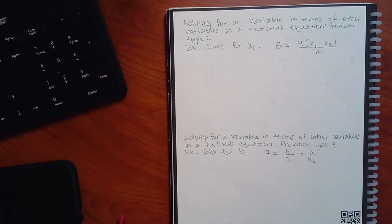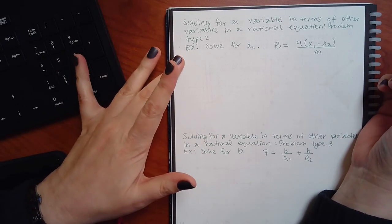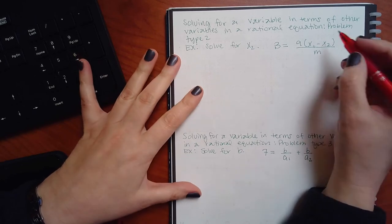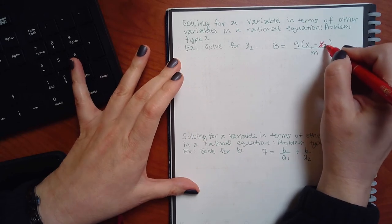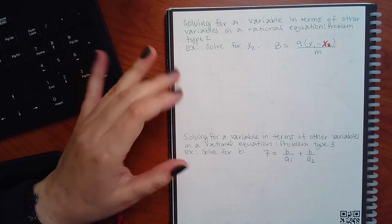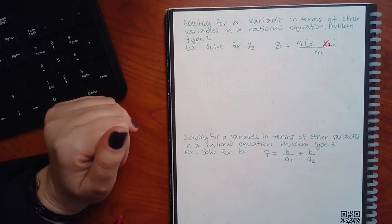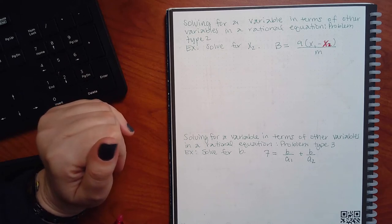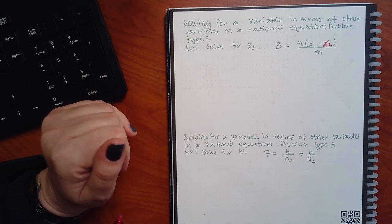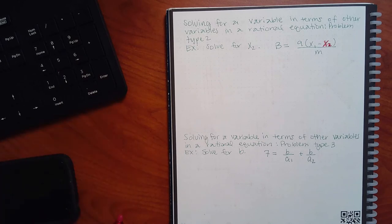Now who am I solving for in this next problem? Be careful — it's not x squared. It's x subscript 2, written x₂, where the 2 is down below as a subscript, not up top as an exponent. Up top means squared; down below is a subscript, which is just a label. So x₁ and x₂ are both x values, but one is one x value and the other is a different x value.